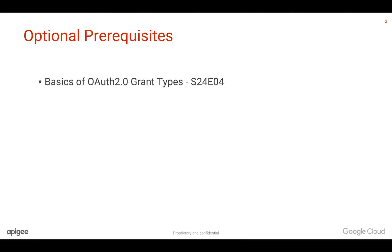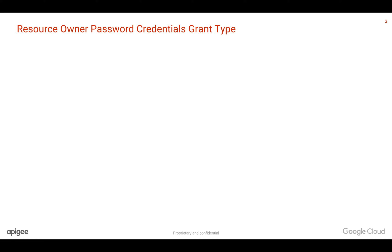Prerequisites of this video: basics of OAuth 2.0 grant types — for that you can refer to an earlier format video. Let's understand how resource owner password credentials grant type works and how a client is able to access the API resources with the consent from the end user.